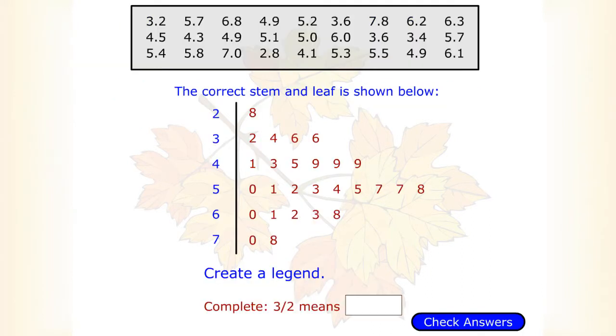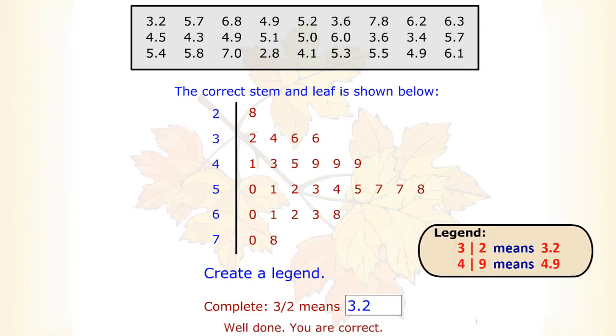If you were creating a legend for this stem and leaf plot, what would a stem of 3 and a leaf of 2 mean? It means 3.2.